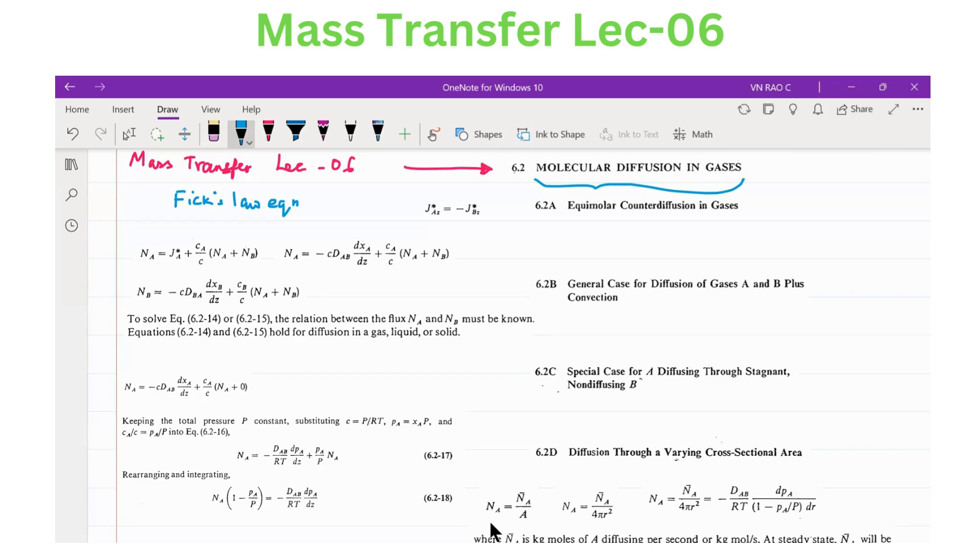There are four different sections under this. Number one, equimolar counter diffusion in gases. Second, the general case for diffusion of gases A and B plus convection.